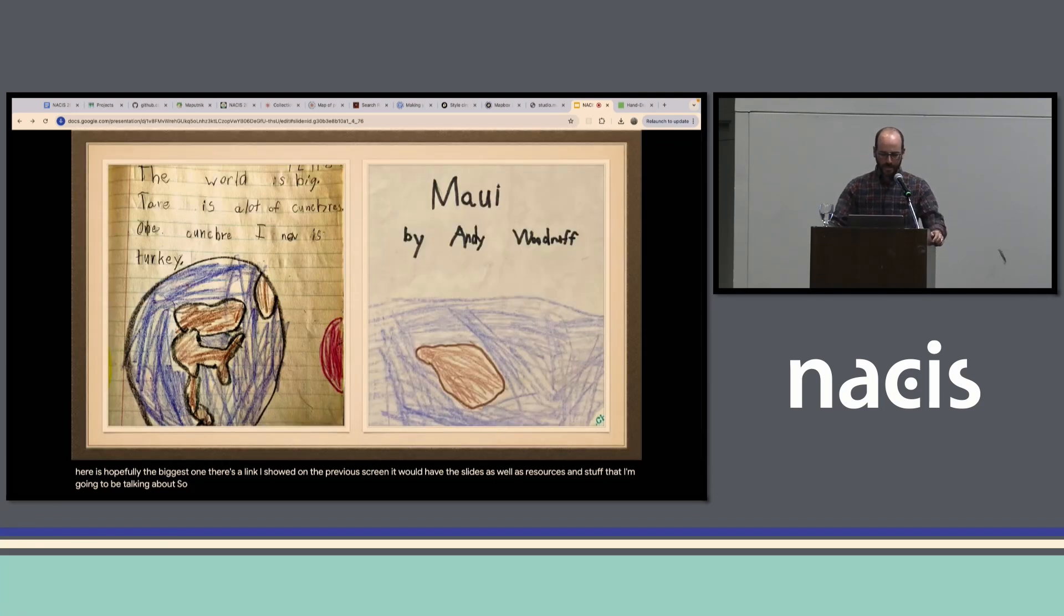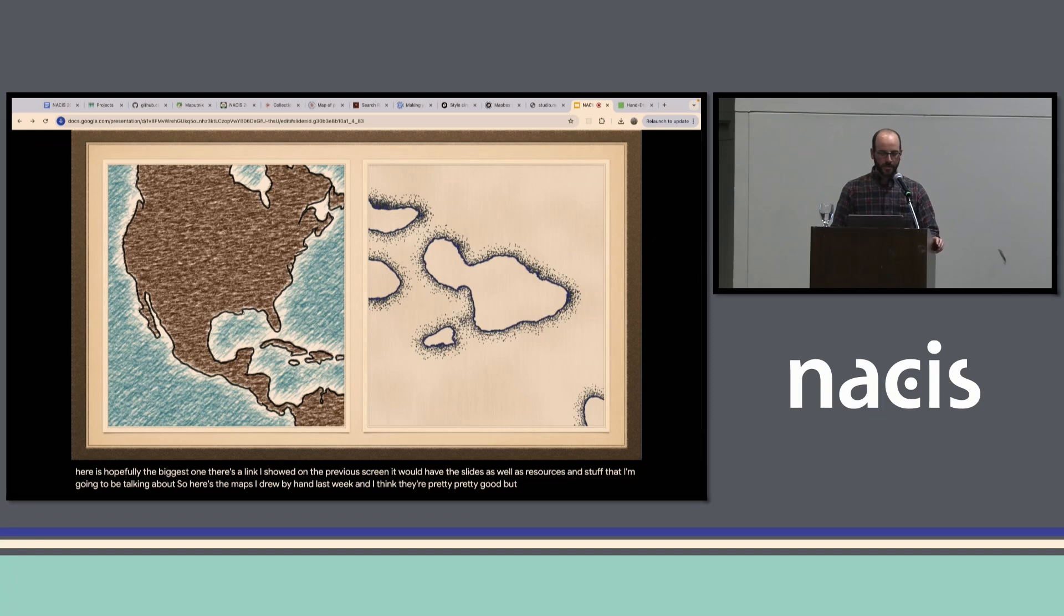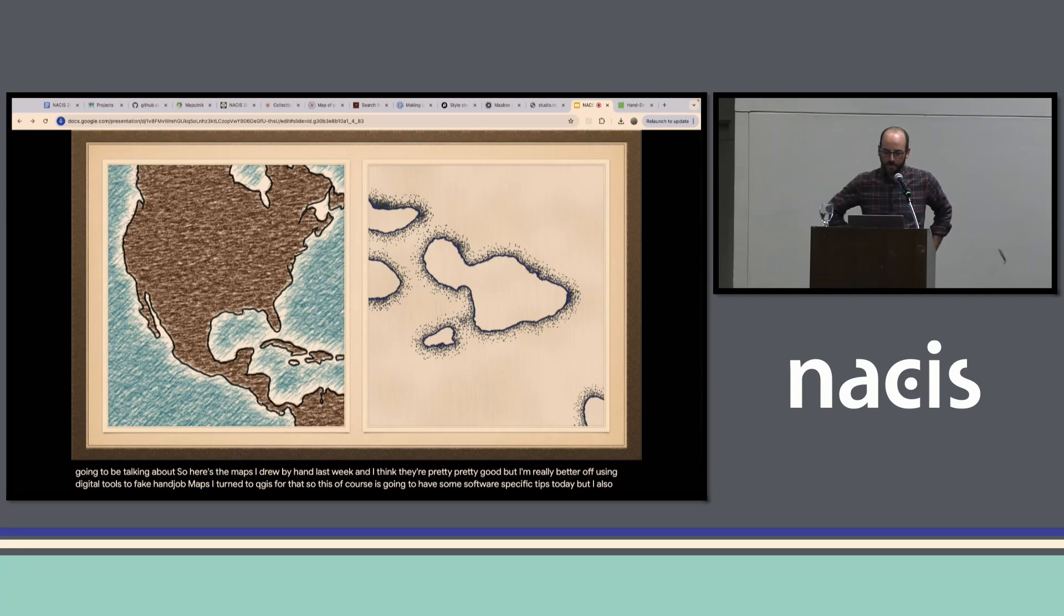Here are some maps I drew by hand last week. I think they're pretty good, but I'm really better off using digital tools to fake hand drawn maps. I turned to QGIS for that, so this of course is going to have some software specific tips today, but I also have some general ideas that I think carry over to other tools.